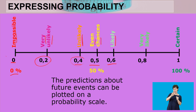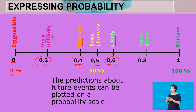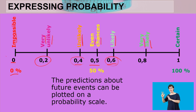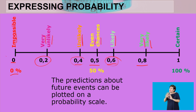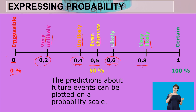Likely corresponds to 0.6 or 60%. When it's 60%, it is more closer to being certain than being impossible, so the chances of it happening are more than the chances of it not happening. Very likely corresponds to 80% and above. At 80% and above, it is much closer to being certain than impossible — the chances of it happening are very high, and on the number line it is far away from the impossible end.